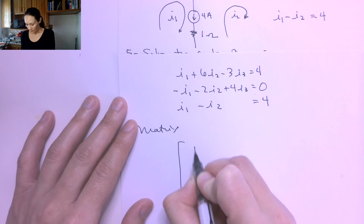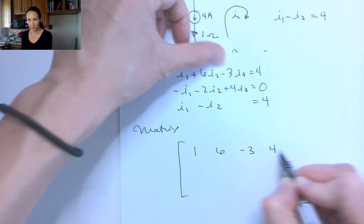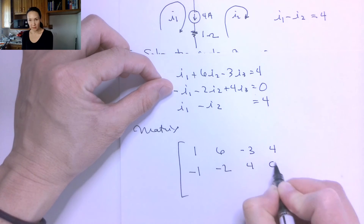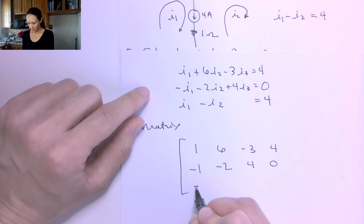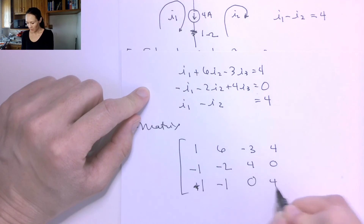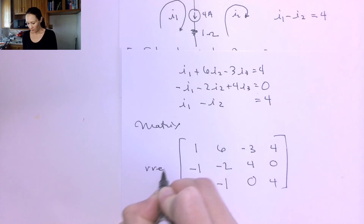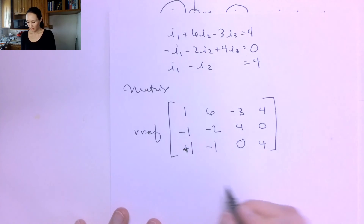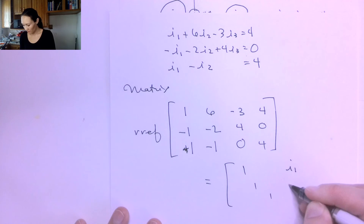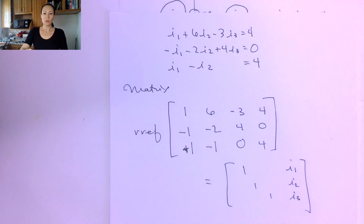Our augmented matrix has coefficients: first row 1, 6, negative 3, and 4; second row negative 1, negative 2, 4, and 0; third row 1, negative 1, 0 (no I3 term), and 4. That's our 3-by-4 matrix. Putting this in row-reduced echelon form will give us the identity matrix, with the last column being all of our currents — I1, I2, and I3.